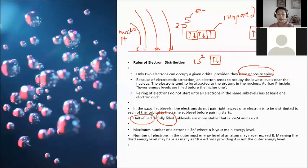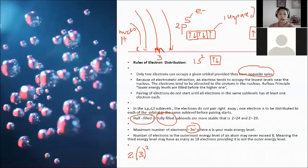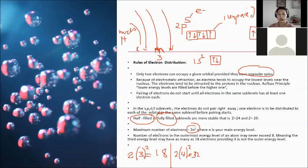The maximum number of electrons equals 2n², where n is the main energy level. For the third level (n = 3): 2 × 3² = 2 × 9 = 18. For the fourth level (n = 4): 2 × 4² = 2 × 16 = 32.